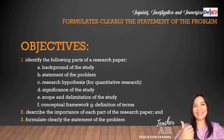Here are today's objectives: number one, identify the following parts of a research paper — (a) background of the study, (b) statement of the problem, (c) research hypothesis for quantitative research, (d) significance of the study, (e) scope and delimitation of the study, (f) conceptual framework, and (g) definition of terms; number two, describe the importance of each part of the research paper; and lastly, formulate clearly the statement of the problem.